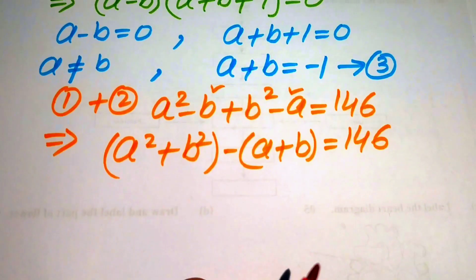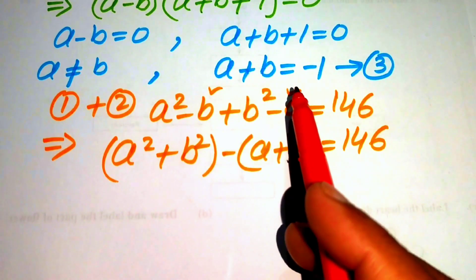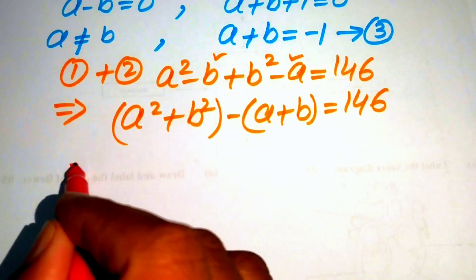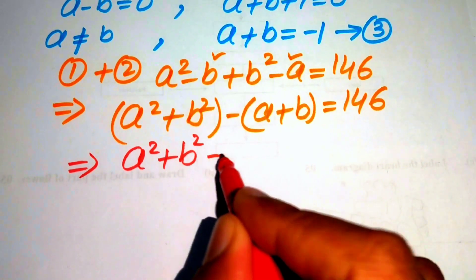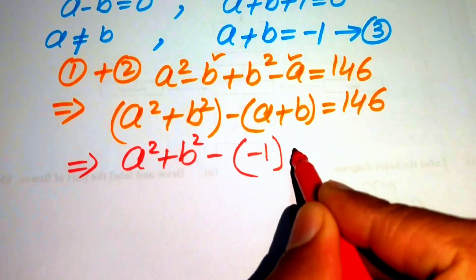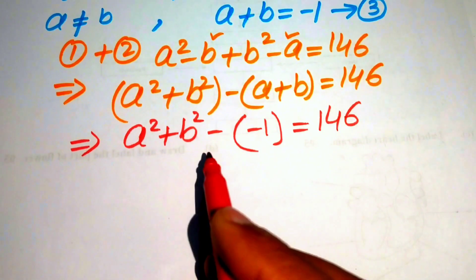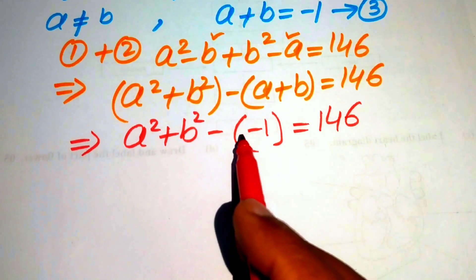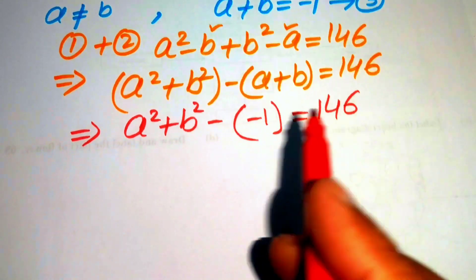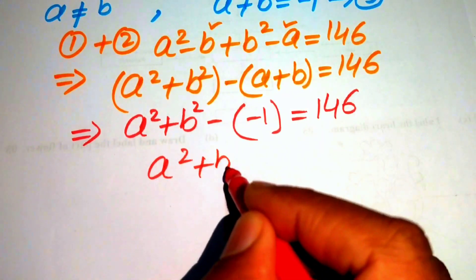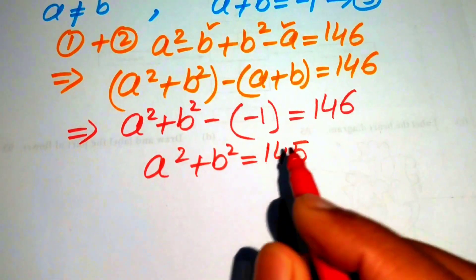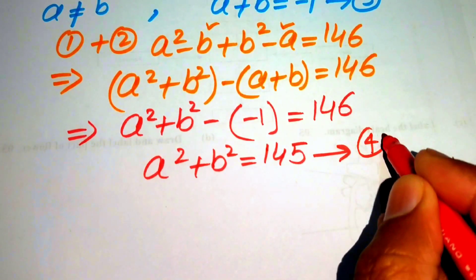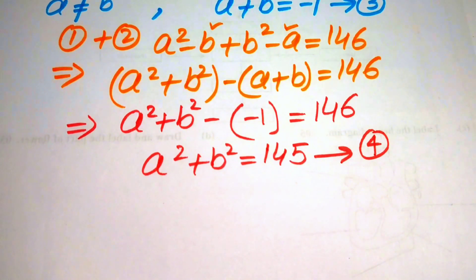From equation number three we have a plus b equals minus one, so we substitute this value in. We get: a squared plus b squared minus (minus one) equals 146, which simplifies to a squared plus b squared plus one equals 146. Moving the 1 to the right-hand side, we get a squared plus b squared equals 145. We call this equation number four.